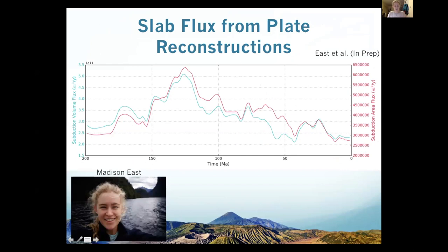On the next slide, you can see these two curves — the area in red and the slab flux volume in blue. Subducting seafloor area is interesting in terms of the deep carbon cycle because, as Sabin was saying, not just carbonate platforms but also carbonate sediments like deep-sea sediments from pelagic organisms — when these are subducted and create continental arcs and volcanism, you can have the release of carbon dioxide back into the atmosphere.